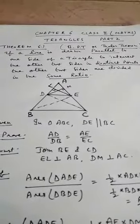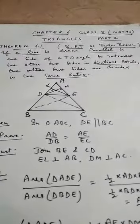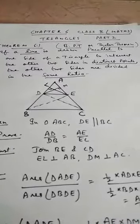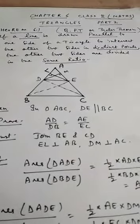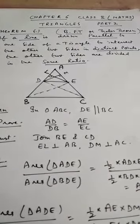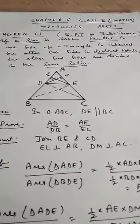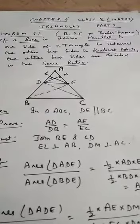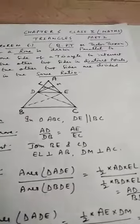BPT or Thales theorem: If a line is drawn parallel to one side of a triangle to intersect the other two sides in distinct points, the other two sides are divided in the same ratio.